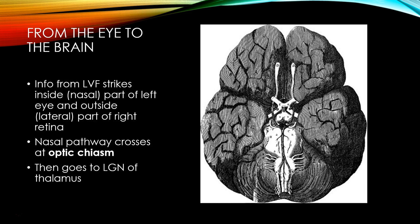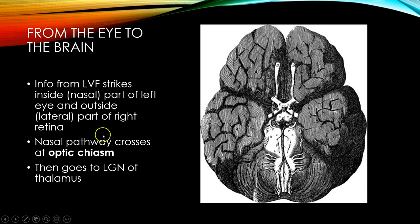The ganglion cell axons leave your eye through the optic disc in the back of the eye. The optic nerves actually cross — this is the bottom of the brain — the optic nerves from the nasal pathways, from the right eye and the left eye, the part from the inner nasal part of the retina, cross at the optic chiasm.